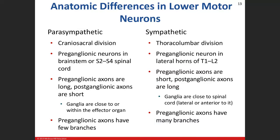The sympathetic division's other name is thoracolumbar, and you'll find it in the spinal cord at T1 through L2. That's why the lateral gray horn is present only from T1 through L2 — those are the preganglionic neurons of the sympathetic division. With short preganglionic axons, the ganglion is close to the spinal cord. We already know one structure close to the spinal cord: the sympathetic chain, running parallel just outside the spine.